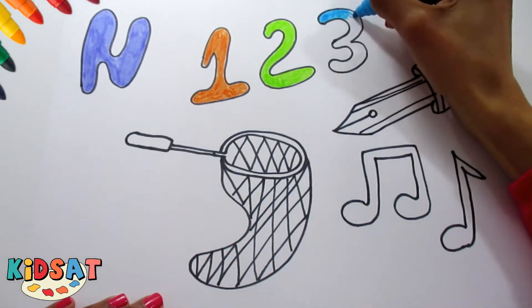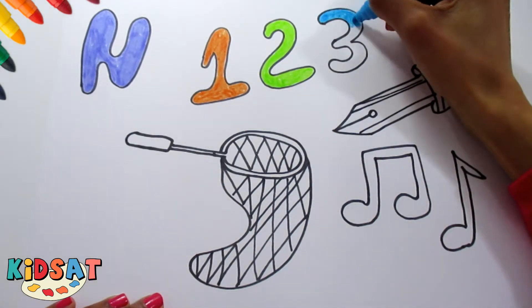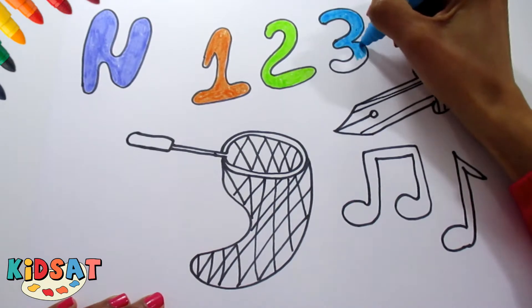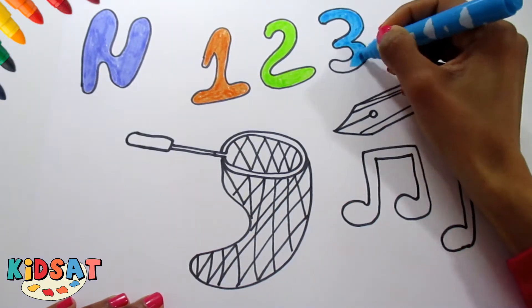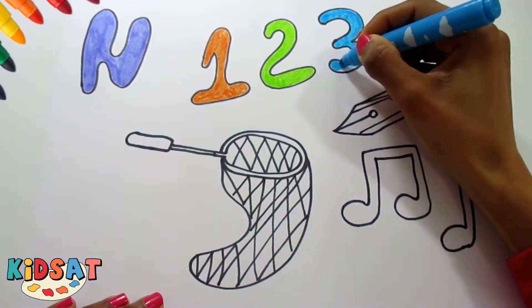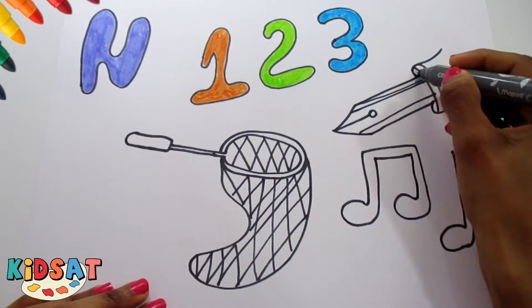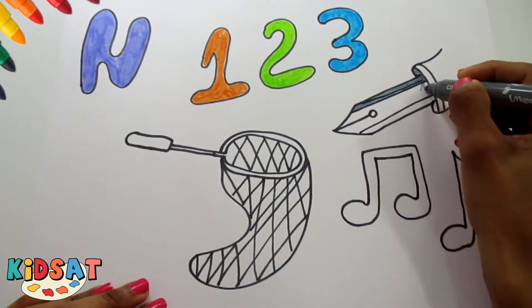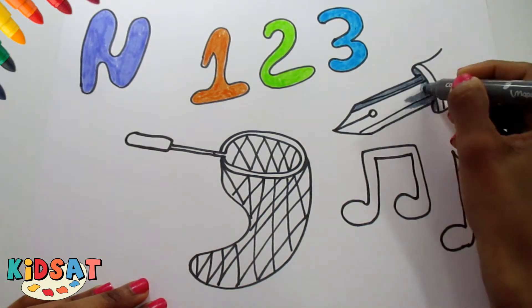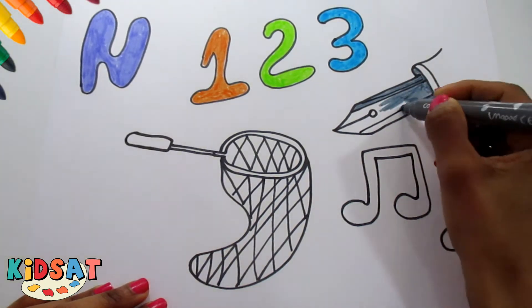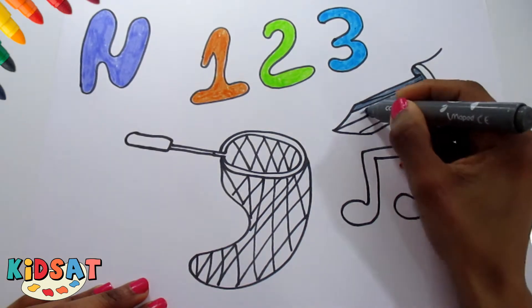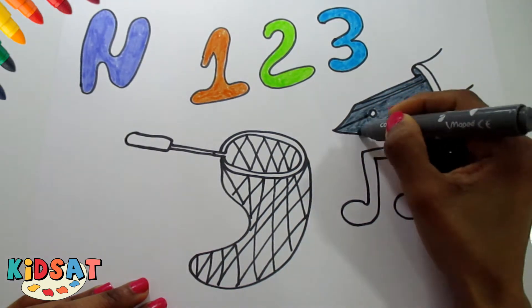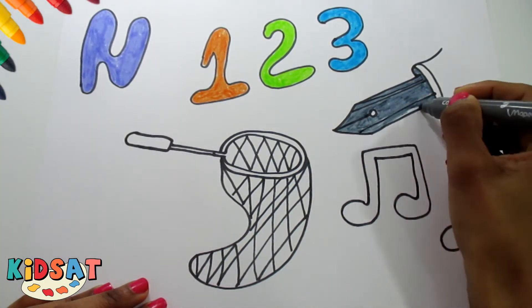ABC, D, E, F, G, H, I, J, K, L, M, N, O, P, Q, R, S, T, U, V, W, X, Y, and Z. Now I know my ABCs, next time won't you sing with me.